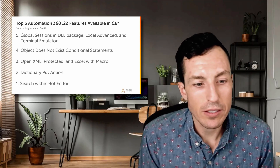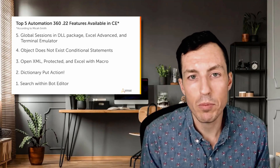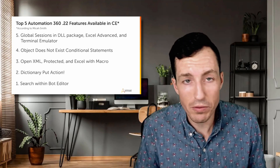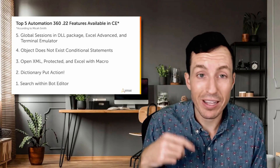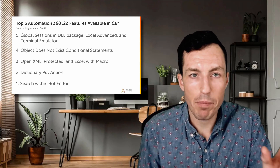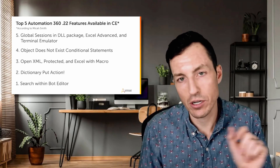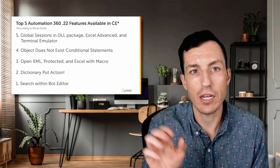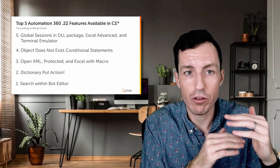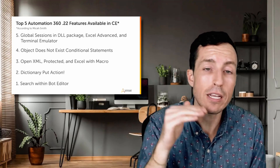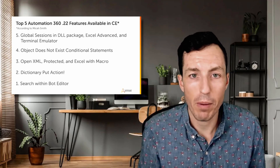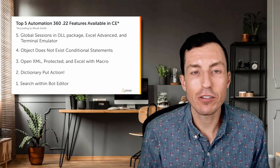The number one feature you should check out is the search within the bot editor. You can now do a search across your entire bot — especially useful if you have a huge bot or you build in flow view. Hit Ctrl+F and it brings up the application search instead of the browser search. You can type in specific phrases like the action name, the package name, or something referenced in a variable. It returns a list of where it found those within your bot, and as you arrow through the list it takes you to the exact area where that action was. It's a quick way to find specific references within your bot.